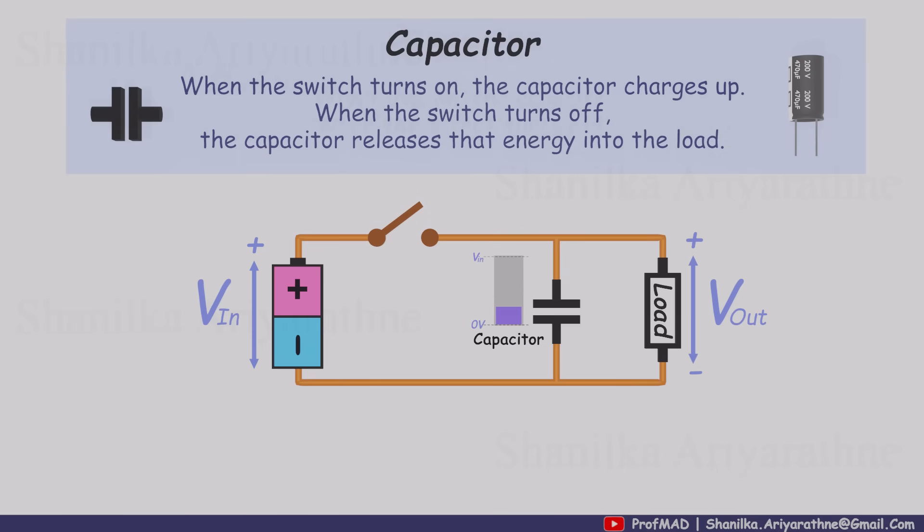Let's start by seeing what happens when we connect a capacitor in parallel with the load. When the switch is on, the capacitor charges up quickly because it's connected almost directly to the battery, with very little resistance in the way.